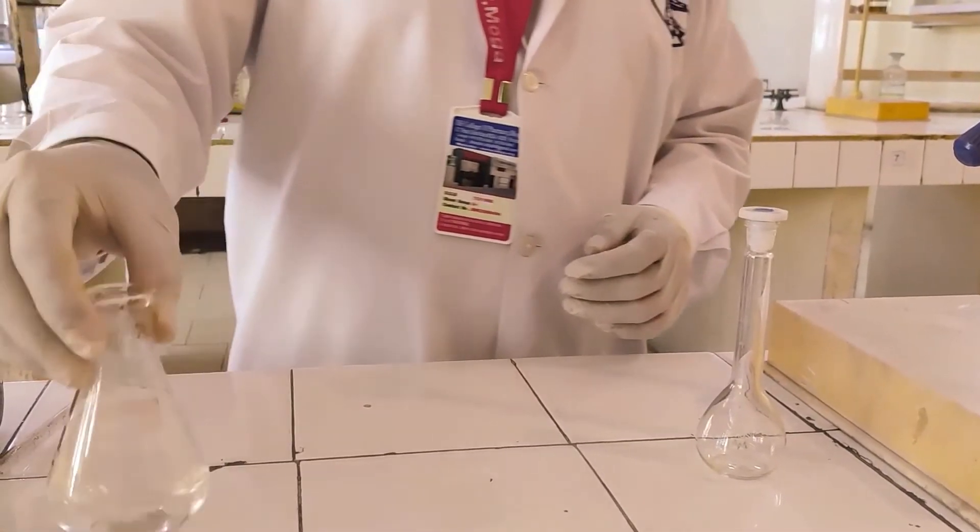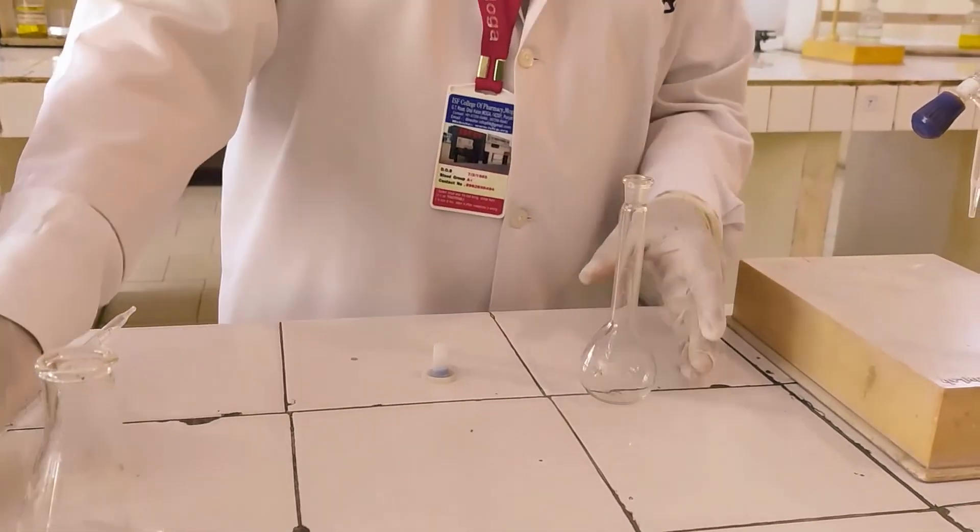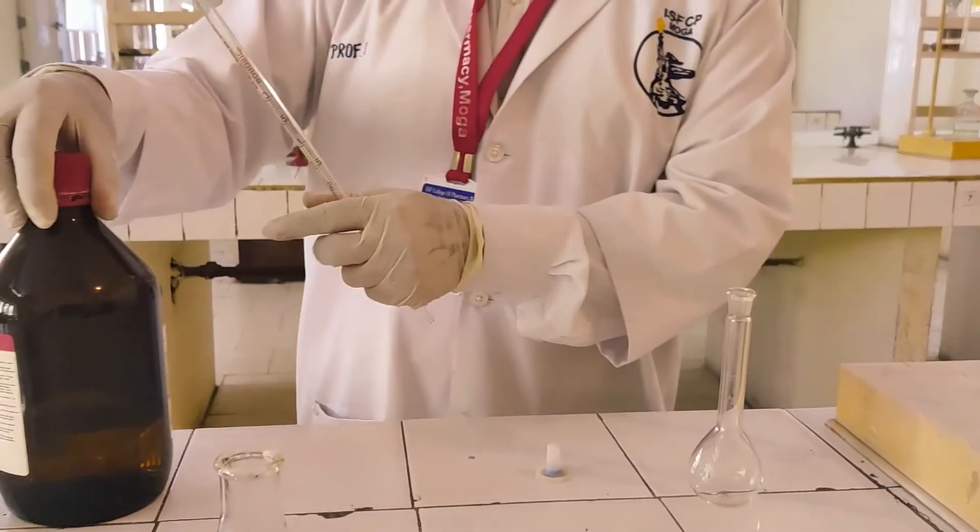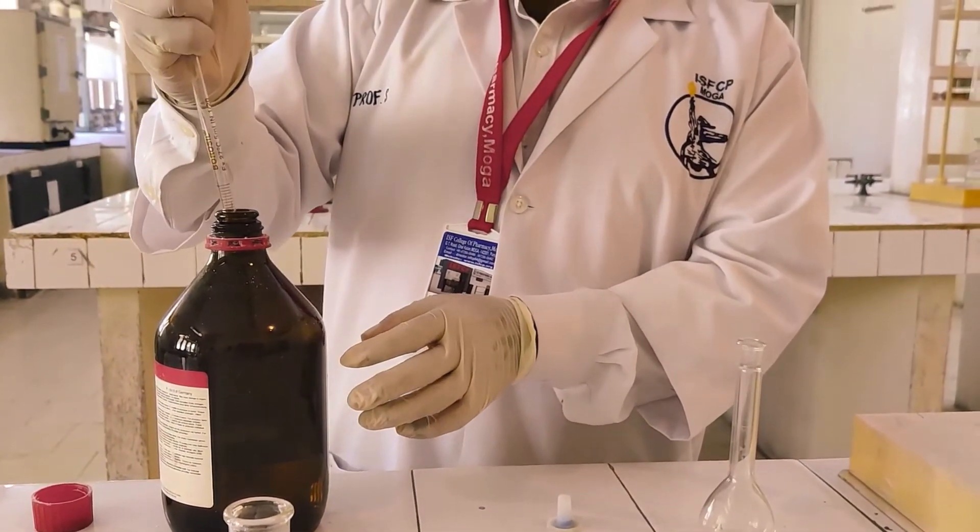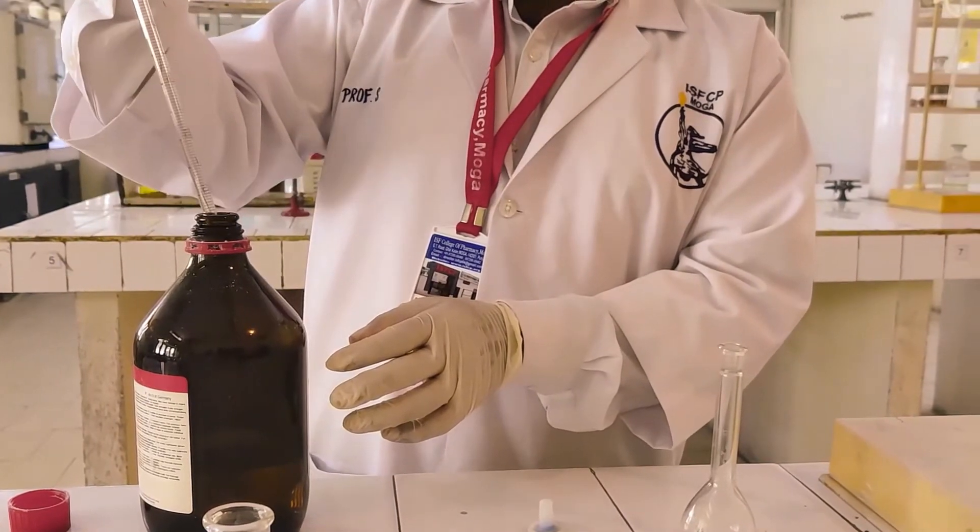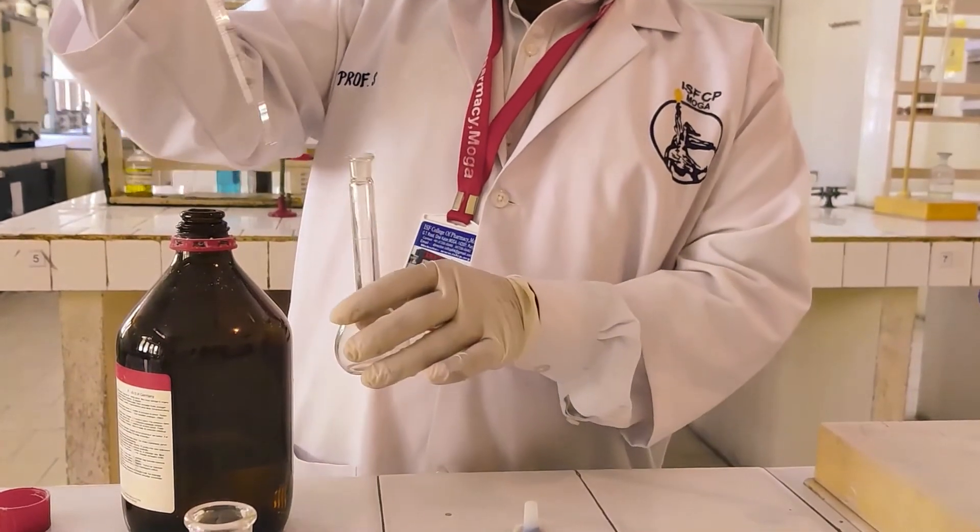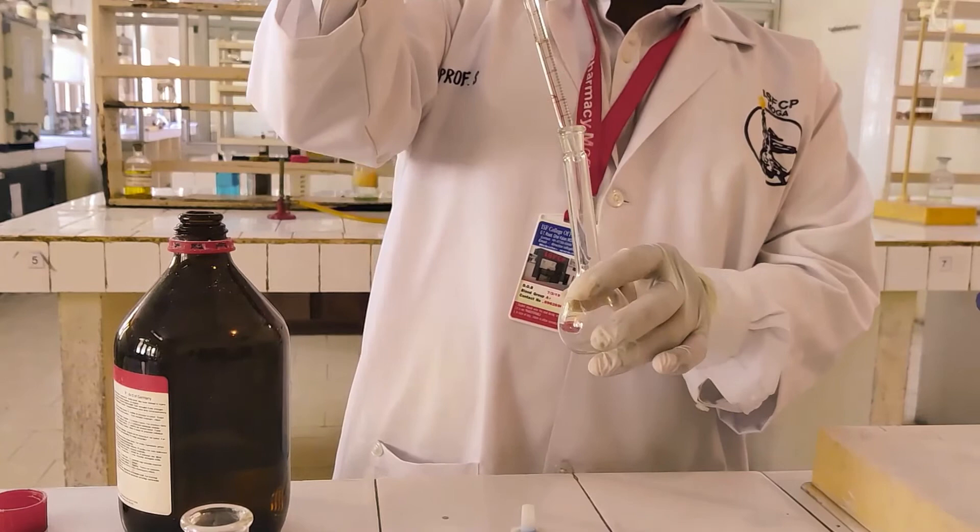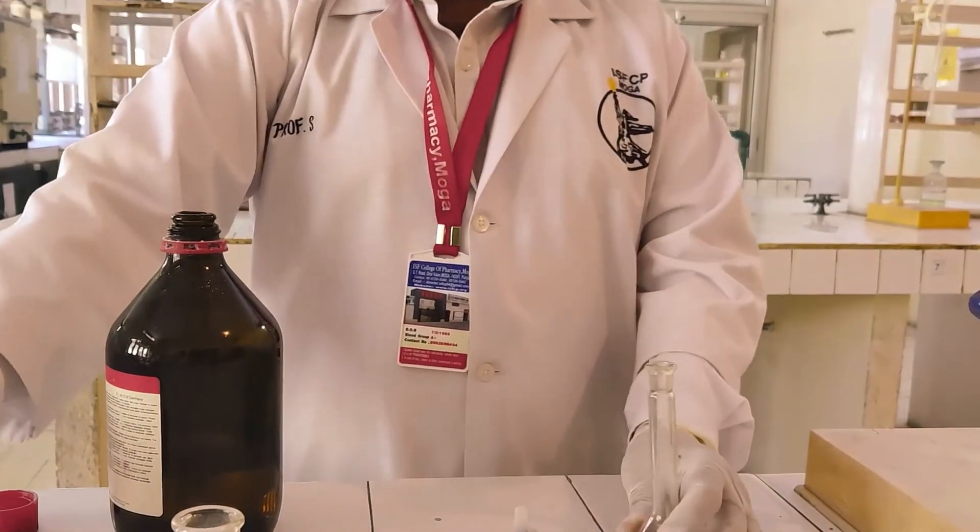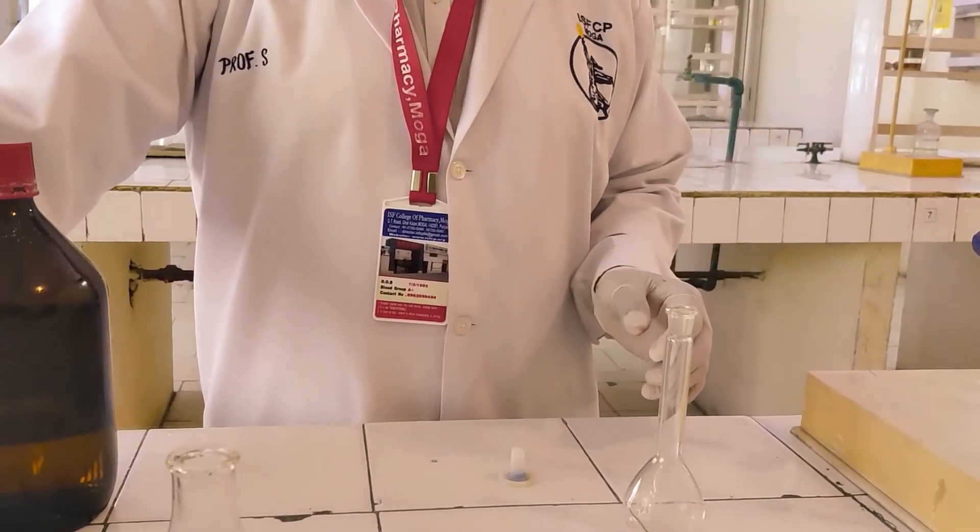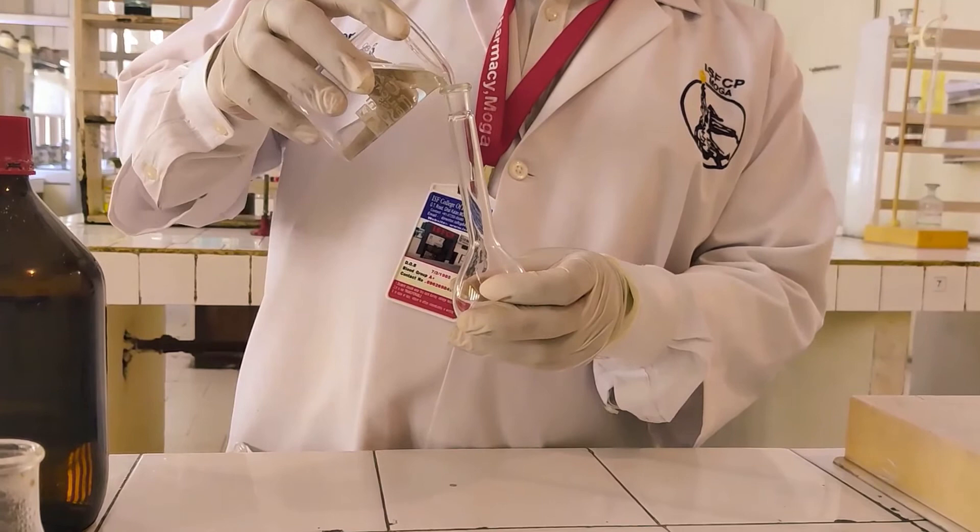Then gently boil it for 10 minutes on heating mantle. Keep aside this boiling solution to cool down. Meanwhile prepare 0.5 molar HCl. Take 2.2 ml of concentrated HCl.